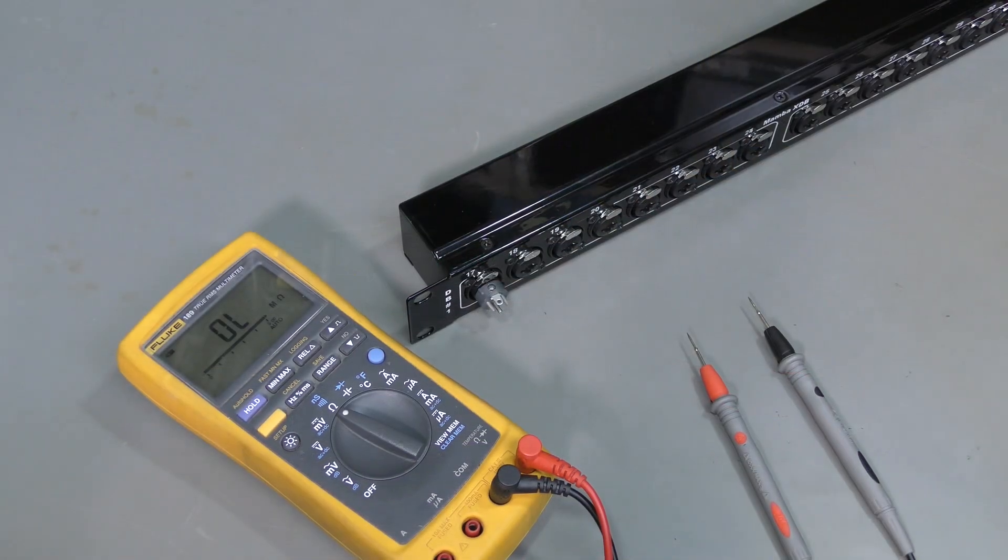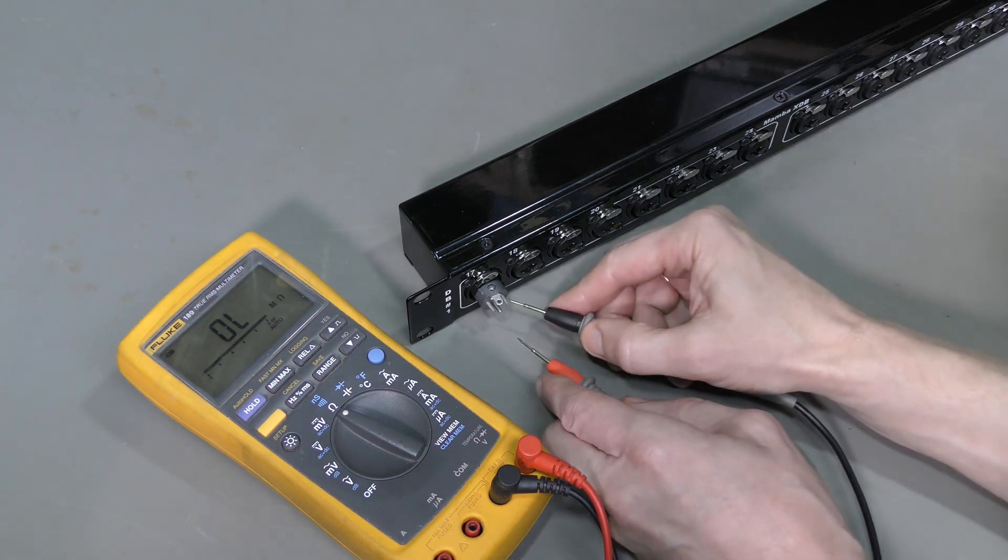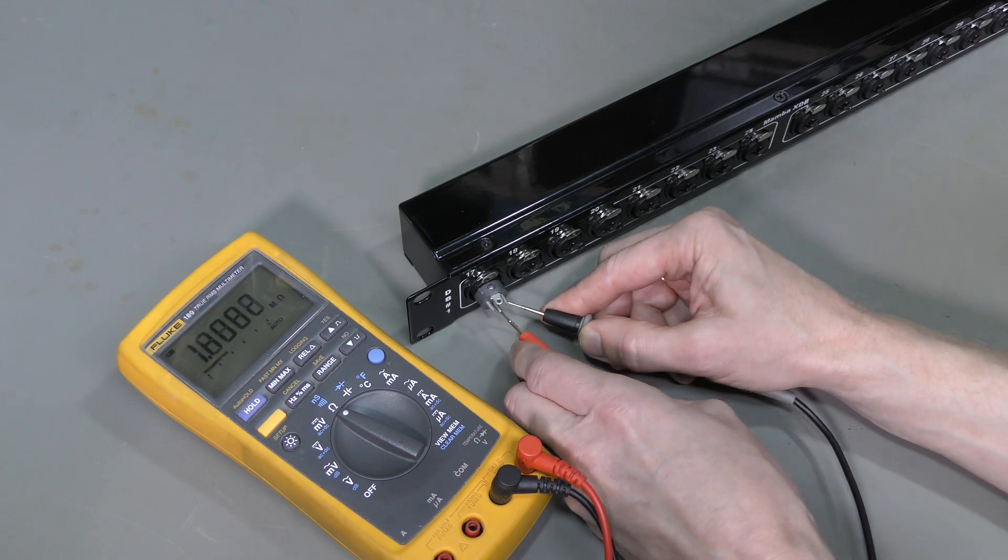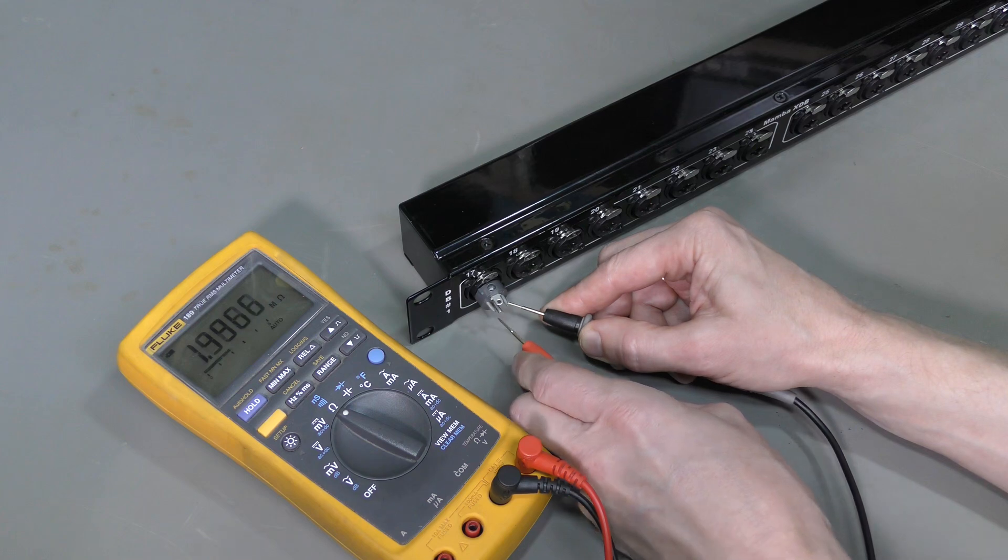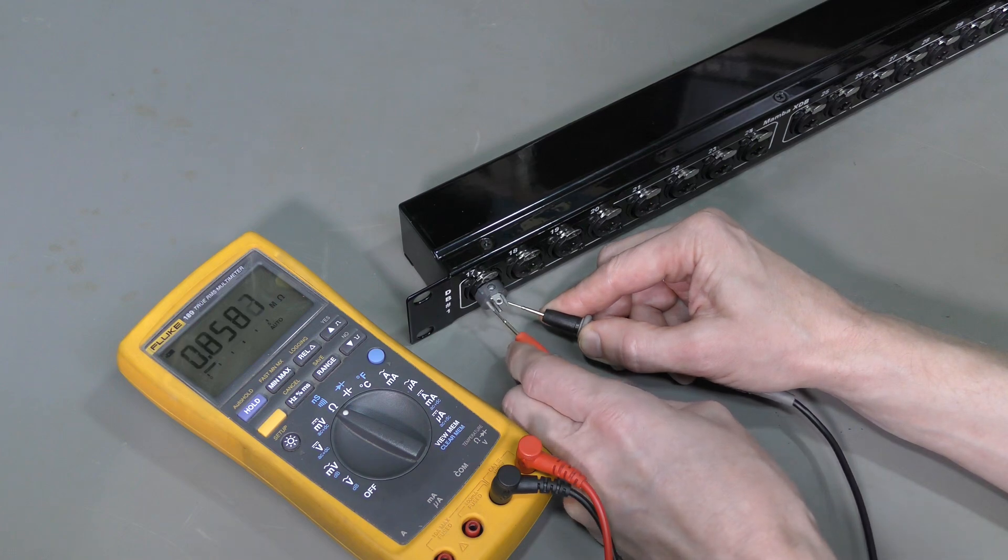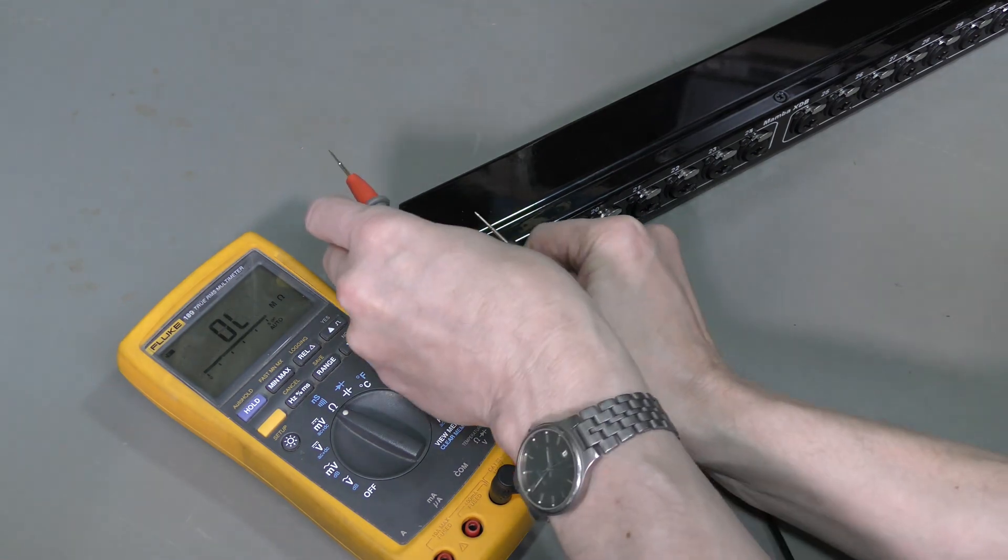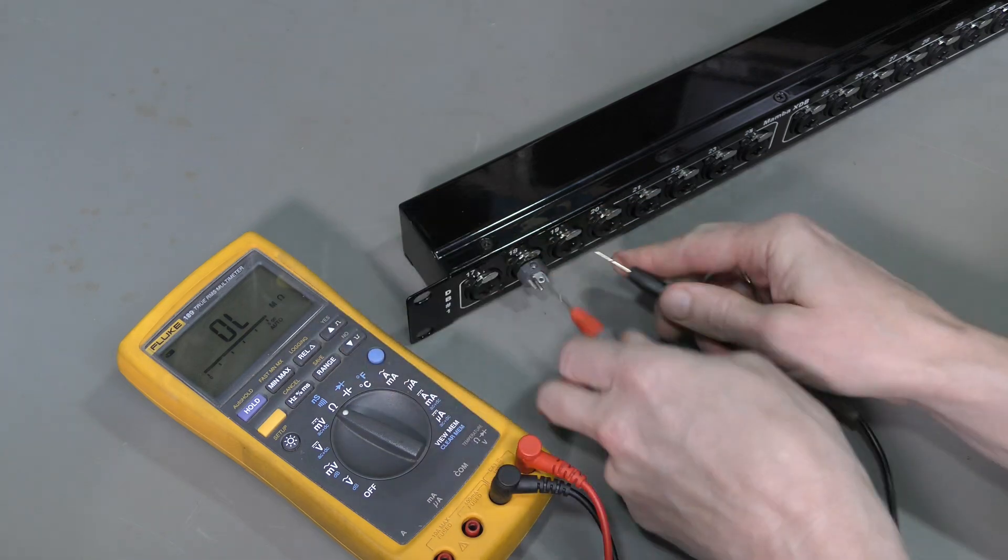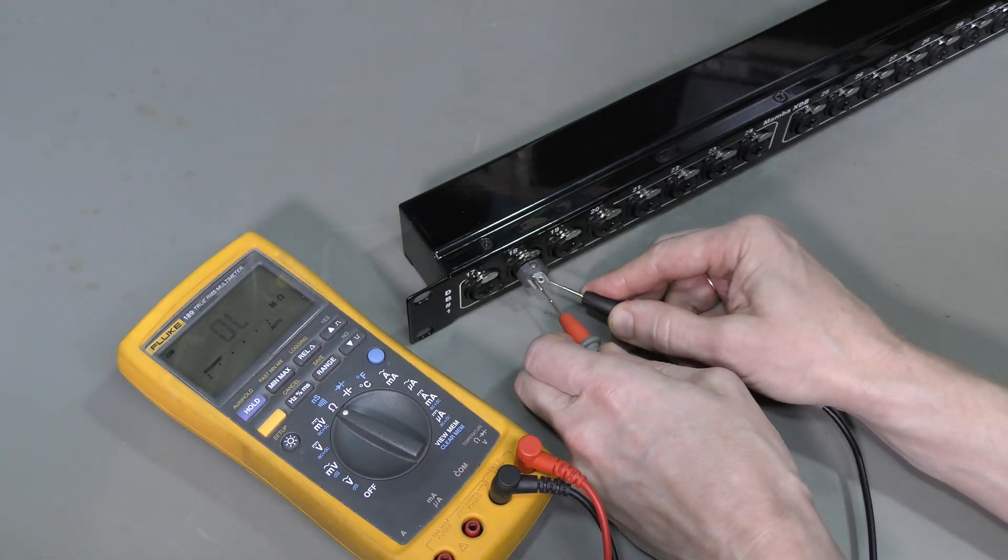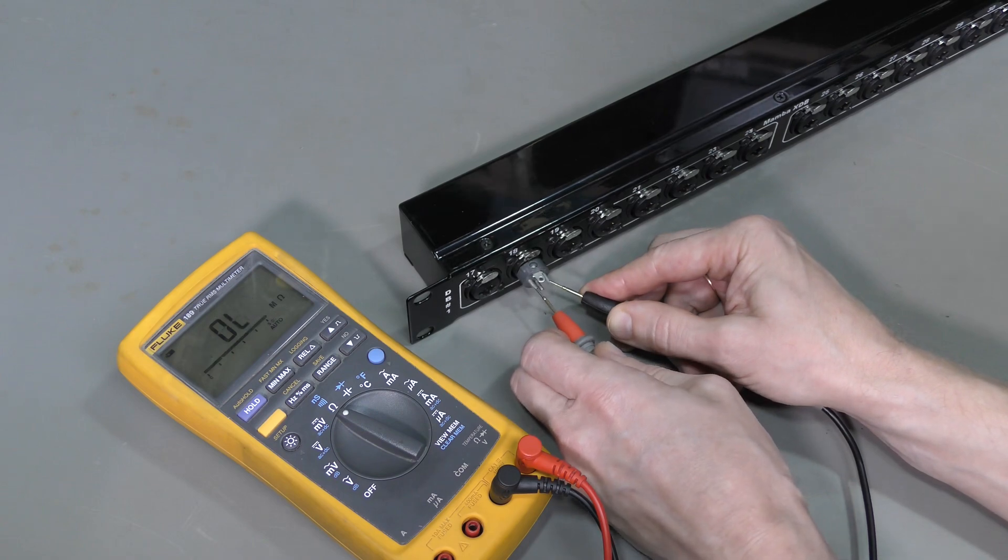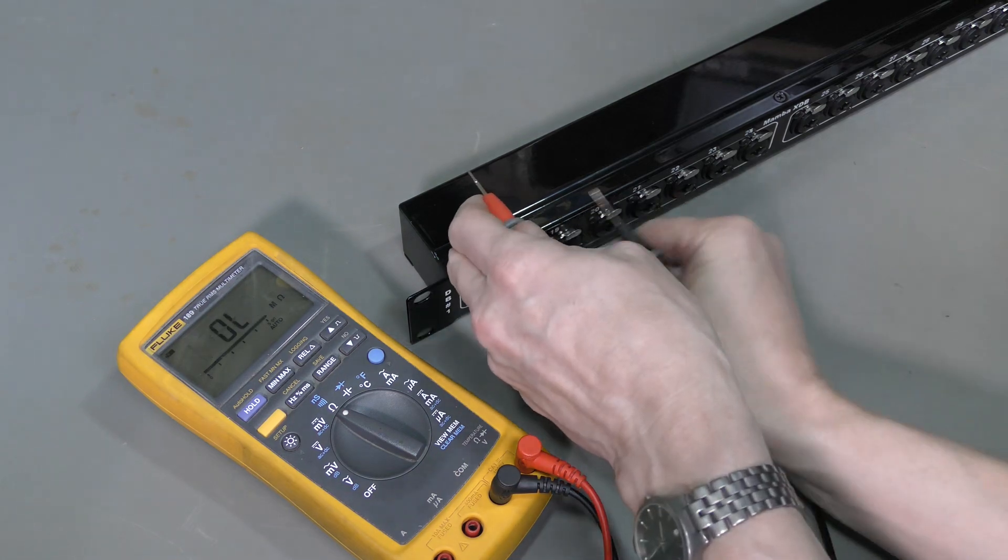It occurred to me to measure resistance. Look at this. This is ground and this is one of the lines. 1.8 meg or so. Another line. 0.9 meg. Another channel. 1.3 or so. 1.2. This is ridiculous.